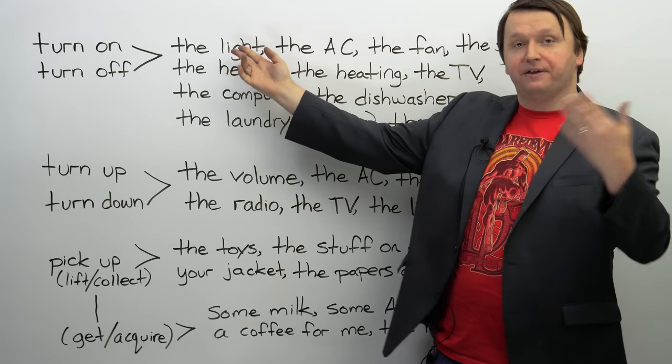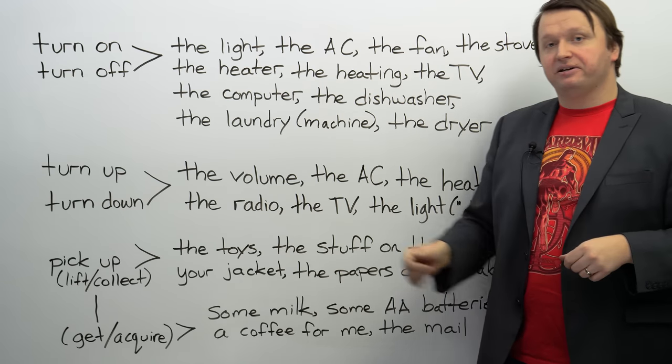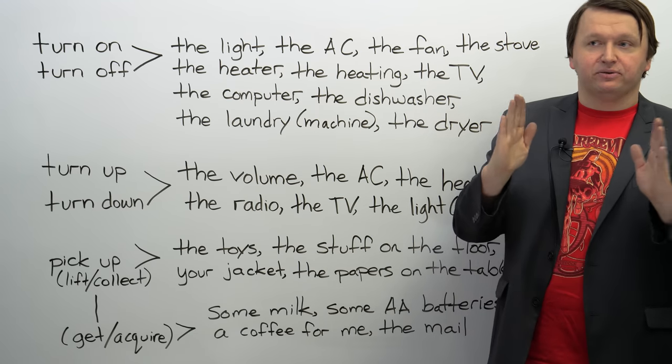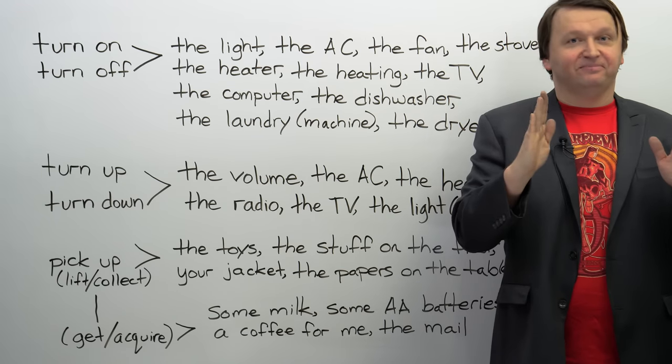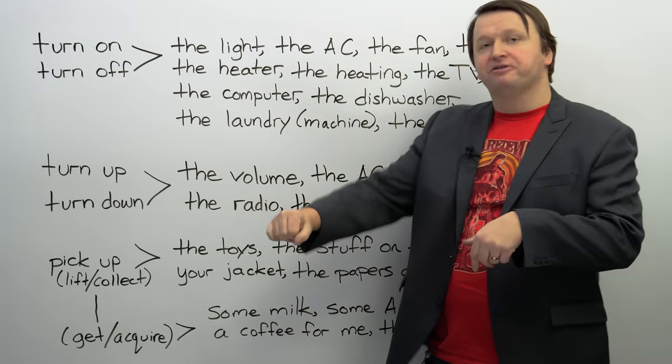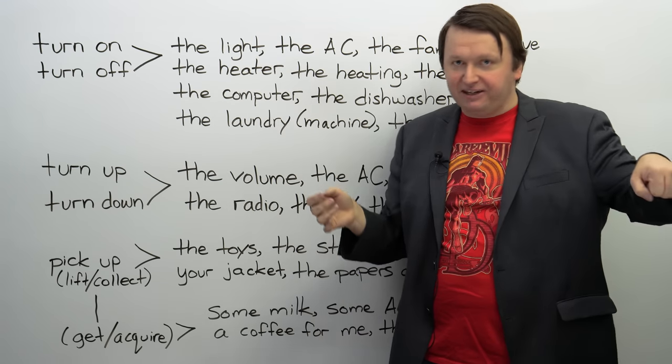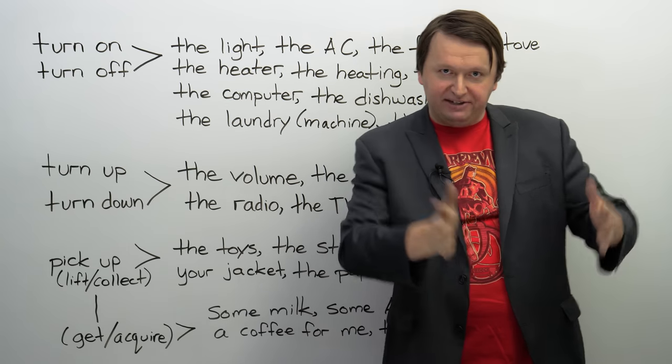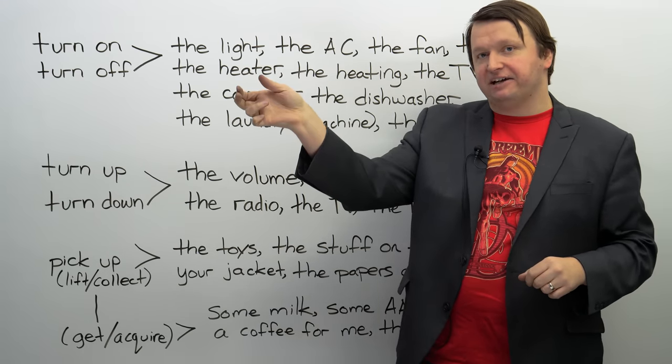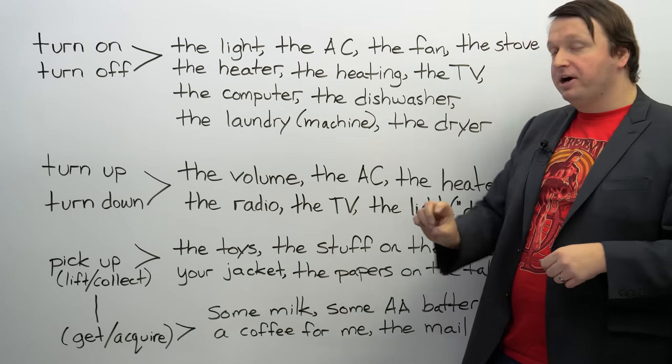You can turn on or turn off the light. Turn on or turn off the AC, which is the air conditioning. Turn on the fan. Turn off the fan. The thing that makes air in your house. Turn on the stove or turn off the stove where you cook. Hey, could you turn off the stove? I think the soup is ready. Turn on the heater or the heating. You might have a portable heater that you just turn on and it makes heat. Or you might have central heating in your house where you adjust the thermostat. So, you can turn on or turn off the heating. Turn on the TV. Turn off the computer. Turn on the dishwasher.